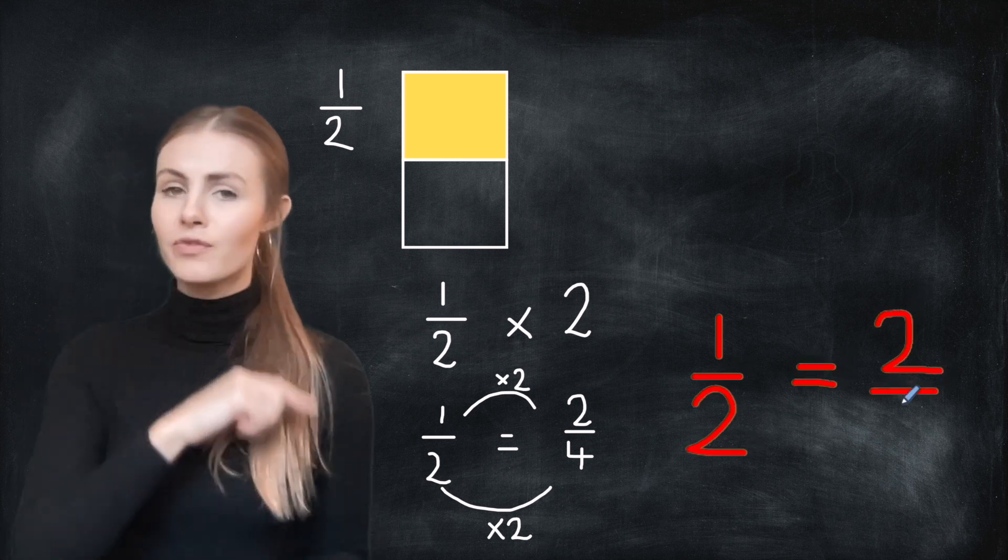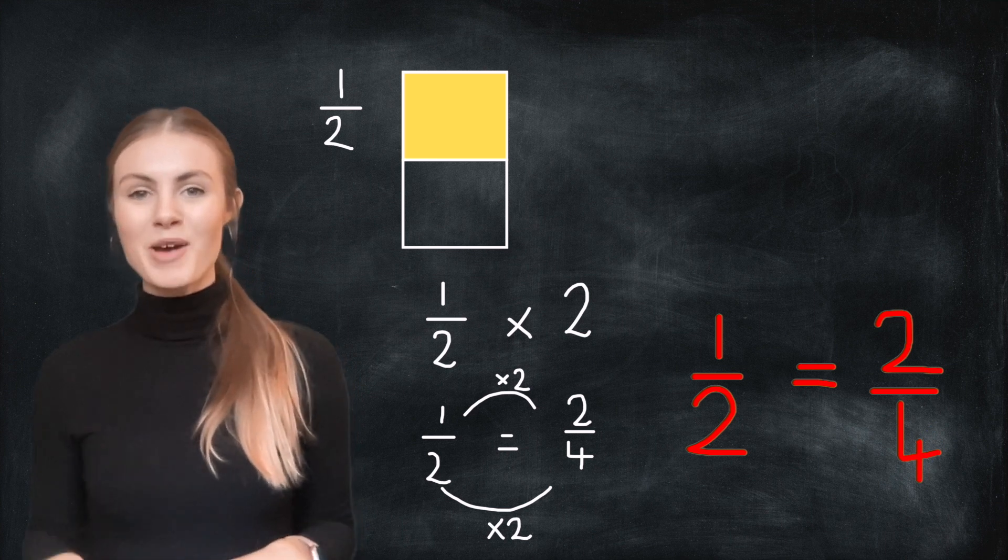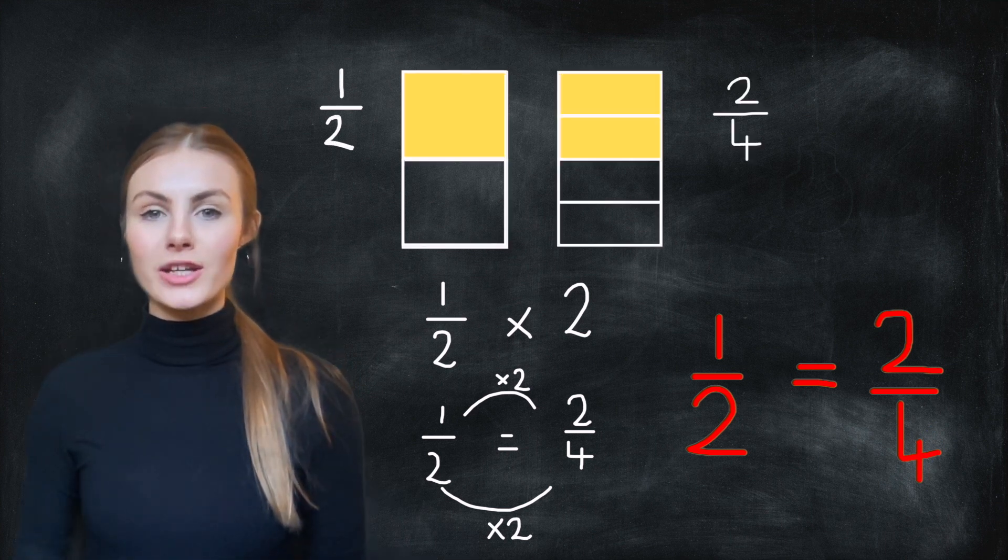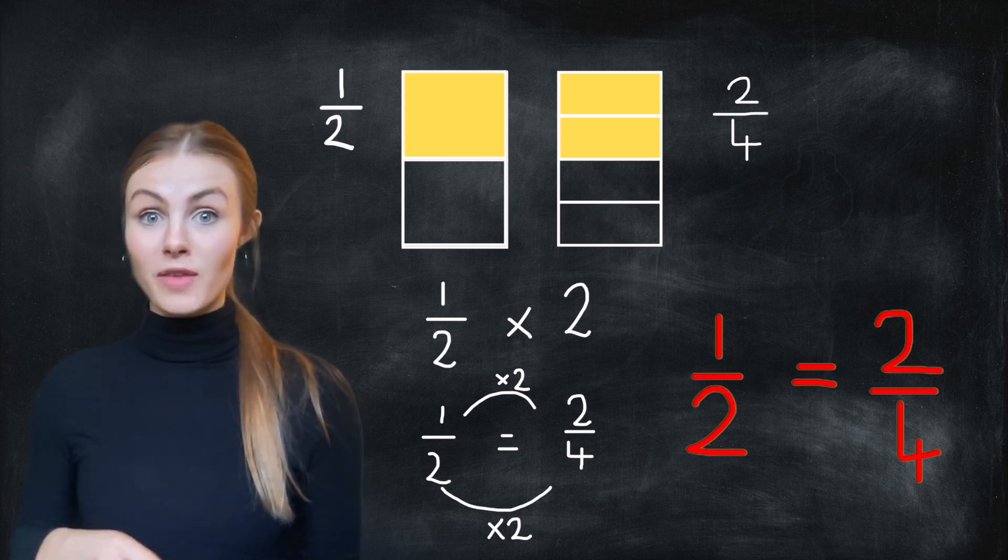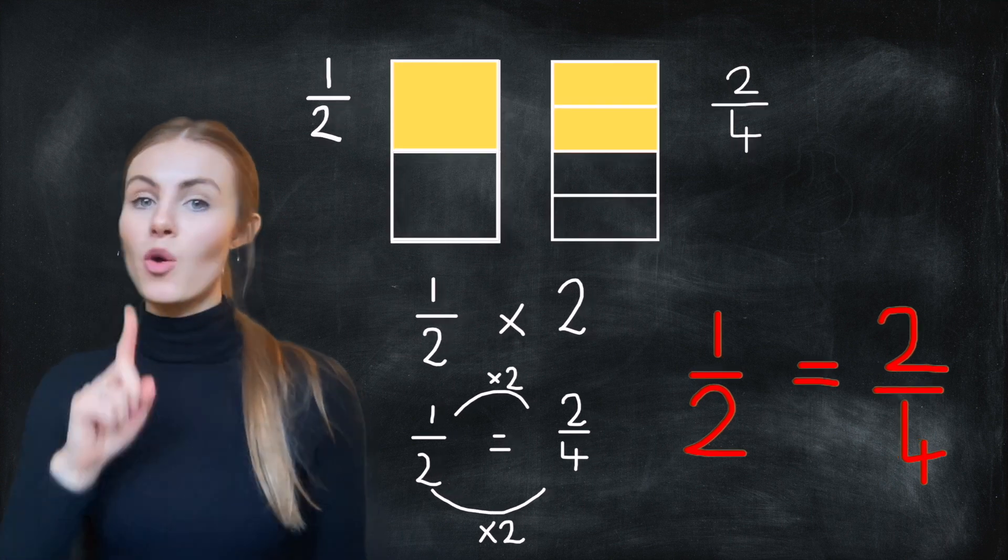We can also prove that these are equivalent fractions using my very handy diagrams. As you can see, when I split my whole into four equal parts, I've got the same size fraction when I've got two quarters and when I've got one half.